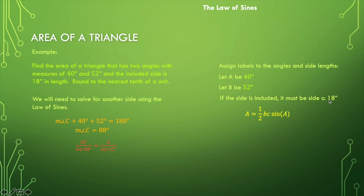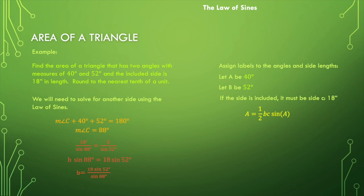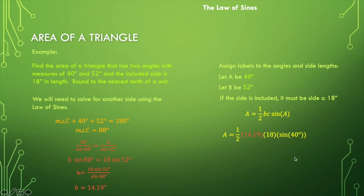Applying the law of sines: side c divided by sine of 88 degrees equals side b divided by sine of 52 degrees. We know side c is 18 inches. Cross-multiplying: b times sine of 88 degrees equals 18 times sine of 52 degrees. Dividing out sine of 88 degrees and calculating gives us b is approximately 14.19 inches. Now we have side c and side b, so we can use the area formula with the sine of angle A.